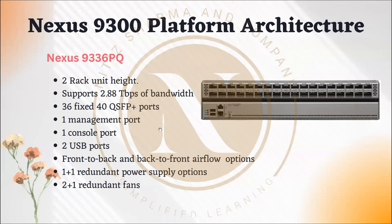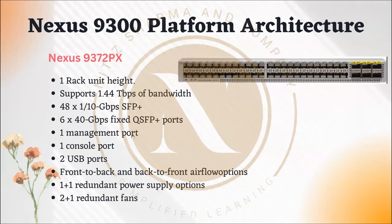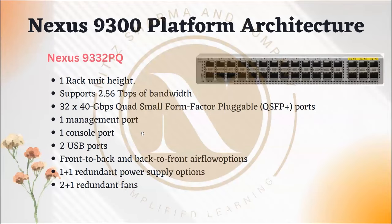The 9336/9332 PQ models support front-to-back airflow options with redundant power supply units and fan units. The 9332 is a single rack unit device — the previous one was two RU. It supports almost 2.56 Tbps of bandwidth and has 32 quad SFP ports, one management port, one console port, and two USB ports.